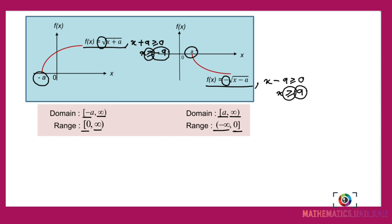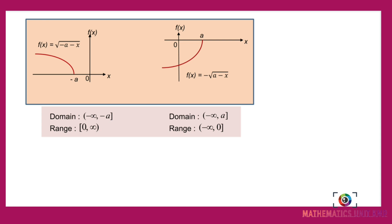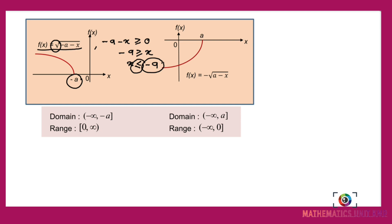For the fifth graph, f(x) equals √(negative a minus x). Solving negative a minus x ≥ 0 gives x less than or equal to negative a. So the starting point is negative a and the graph goes to the left and upward. The domain is from negative infinity to negative a and the range is from 0 to infinity.